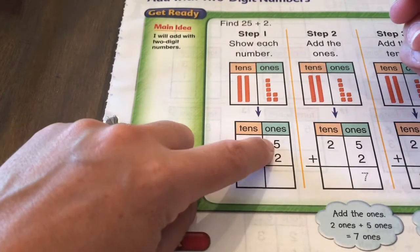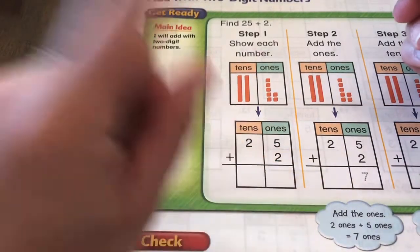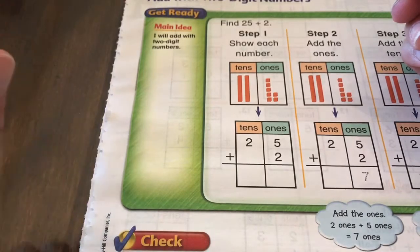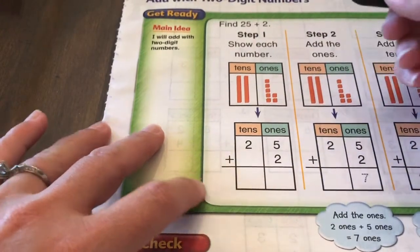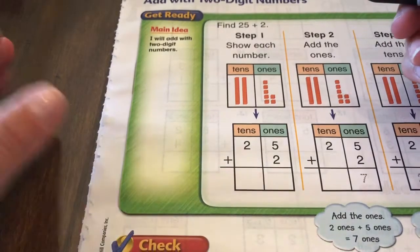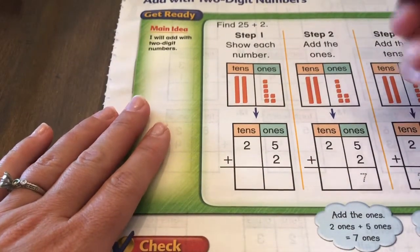So we have the number 25 plus 2, which I know a lot of you know the answer to that very quickly, but I want you to start practicing doing it this way. It's important for when you start adding larger numbers when you're a little bit older.